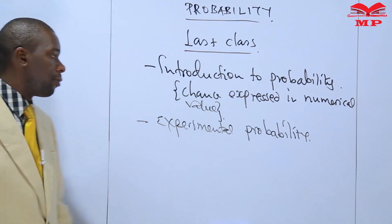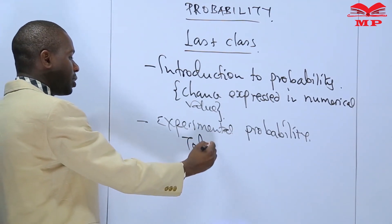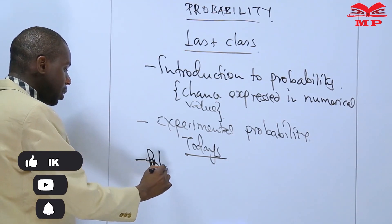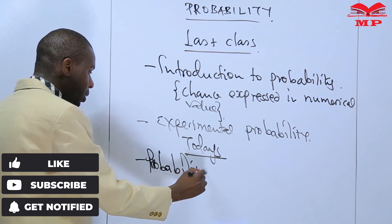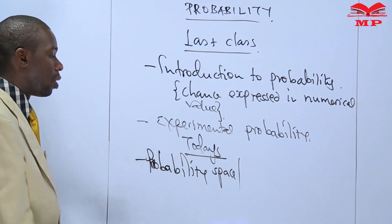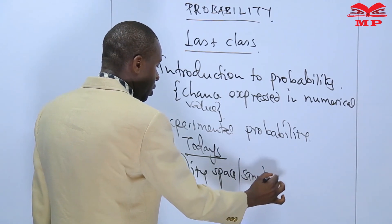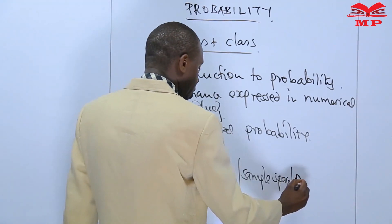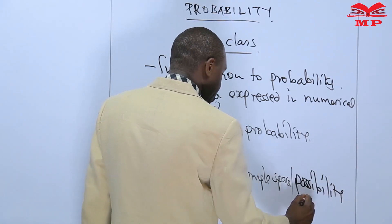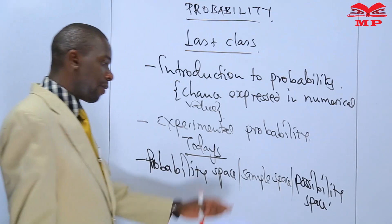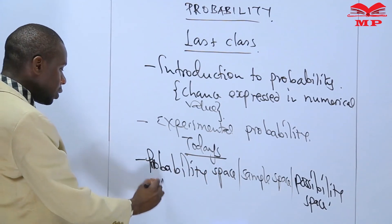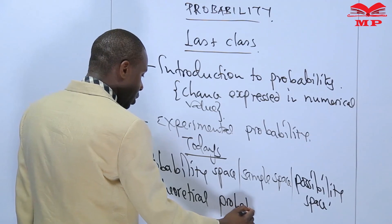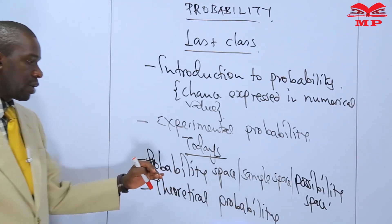Today we are going to look at probability space, which is sometimes called sample space and sometimes also called possibility space. Apart from probability space, we are also going to look at what we call theoretical probability.